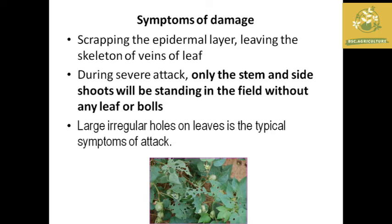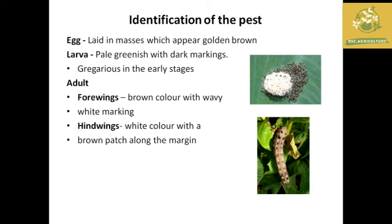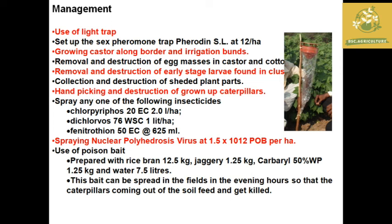Large irregular holes on leaves are a typical symptom of attack. The eggs are laid in masses and the larva is pale greenish with dark markings, a gregarious feeder in early stages. The adult has brownish forewings with wavy white markings and white hindwings with a brown patch along the margin. Management includes setting up light traps, growing castor along border rows, hand picking and destruction of larvae in clusters, chemical or parasitoid sprays, nuclear polyhedrosis virus (NPV) sprays, and poison baits.